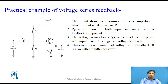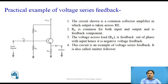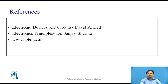Here is a practical example of voltage series feedback. This is an amplifier in which the output is taken across the emitter resistance Re. The input to the amplifier is between the base and ground, and the voltage from base to ground equals the sum of Vbe plus the voltage across Re. Since the voltage across Re is also the output voltage, Re is common to both input and output — this gives the feedback component in the circuit. This is the example of voltage series feedback; the next video will analyze this circuit in detail.